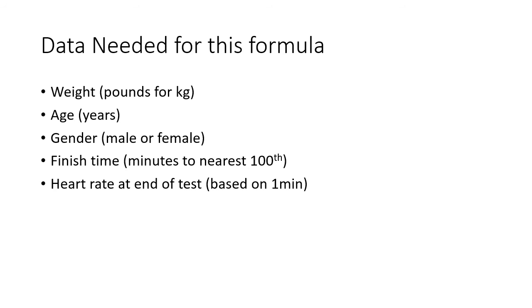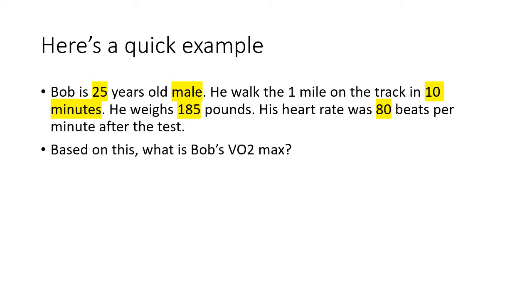Here's a quick example. Bob is a 25-year-old male that finishes the 1-mile walk test in 10 minutes. After the test, his heart rate was 80 beats per minute. Based on data in this example, what is Bob's VO2 max?